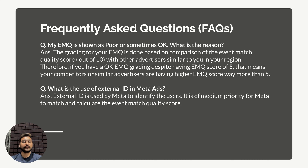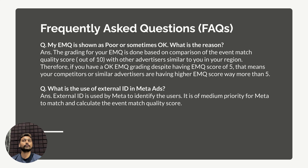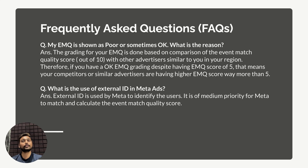Next question: my EMQ score is shown as 'poor' or 'okay' — what's the reason? This grading of poor, okay, or good is done by comparing your EMQ with similar advertisers in your region. For example, if your EMQ score is 5 and your competitor's is 1 or 2, you'll be graded as good or great. But if your score is 5 or 6 and competitors have 8 or 9.3, your EMQ is graded as okay. So focus on this relative grading rather than the raw score out of 10 — it shows where you stand among similar advertisers.